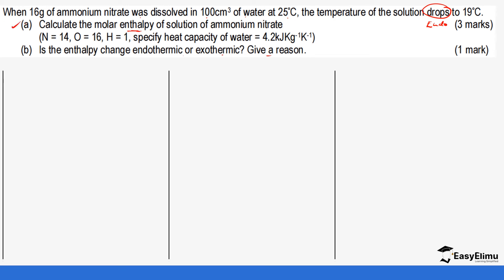Let's look at the first part of the question. First of all, we have the mass of the solution. Since ammonium nitrate is in solid state, we do not take the 16 grams — we only take the mass of the water, which is 100 grams, converting using a density of 1 gram per centimeter cubed. Next we look at the change in temperature.